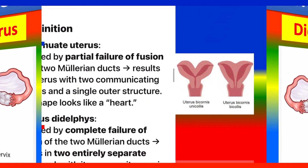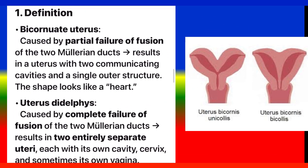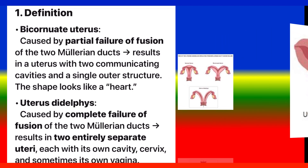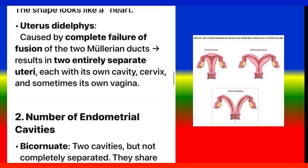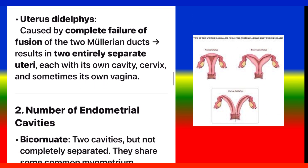Point 1: Definition. Bicornuate uterus is caused by partial failure of fusion of the two Müllerian ducts, resulting in a uterus with two communicating cavities and a single outer structure — the shape looks like a heart. Uterus didelphys is caused by complete failure of fusion of the two Müllerian ducts, resulting in two entirely separate uteri, each with its own cavity, cervix, and sometimes its own vagina.